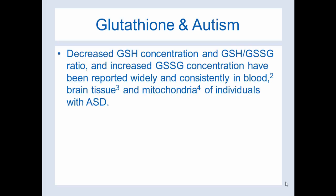Glutathione and autism: decreased GSH concentration and the ratio of GSH to GSSG, as well as increased GSSG concentration, have been reported widely and consistently in blood, brain tissue, and mitochondria of individuals with ASD. Those with autism are likely dealing with this glutathione depletion, as well as an imbalance in the ratios of this important redox equilibrium, which matters for so much of cellular functioning.